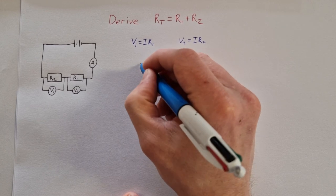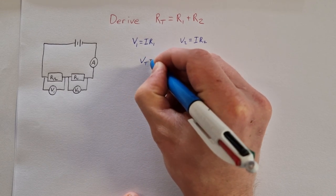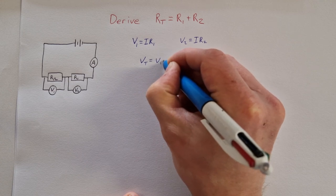We know that the total voltage or potential difference is Vtotal = V1 + V2.